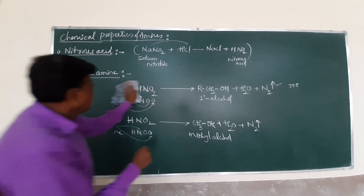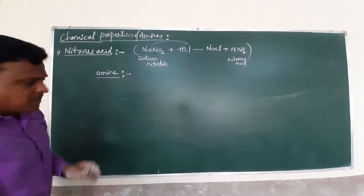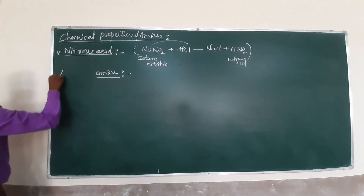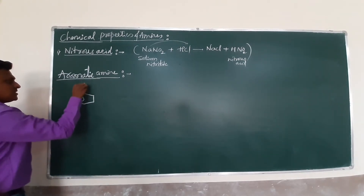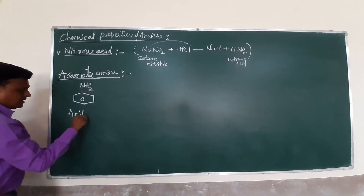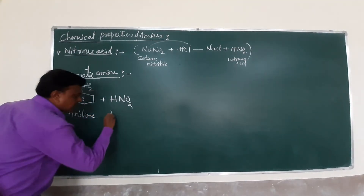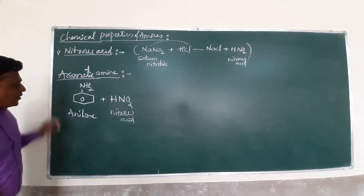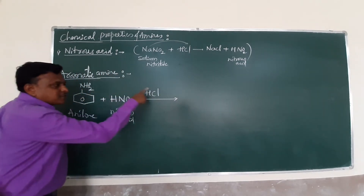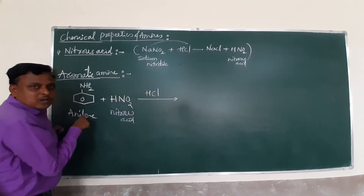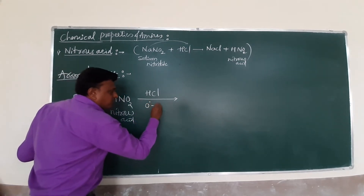After aliphatic amines, the same nitrous acid reaction applies to aromatic amines. The aromatic amine we focus on is aniline (benzene amine). However, aniline does not directly react with nitrous acid. First, aniline is dissolved in hydrochloric acid — since aniline is a base and HCl is an acid, they easily neutralize. Once dissolved, it then reacts with nitrous acid at a temperature of 0 to 5 degrees Celsius.